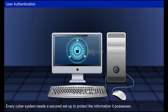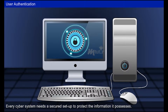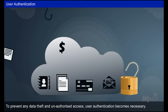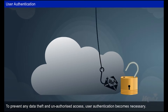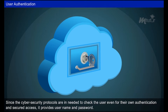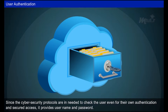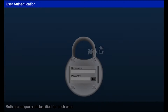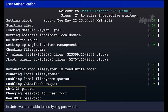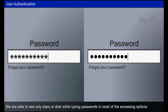Monty asked the reason behind the access requirement, so Sendal started explaining about user authentication. Every cyber system needs a secured setup to protect the information it possesses, to prevent data theft and unauthorized access. User authentication becomes necessary since cyber security protocols need to verify the user. It provides a unique username and password for each user. In Unix, typing passwords is not visible on screen.